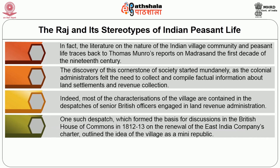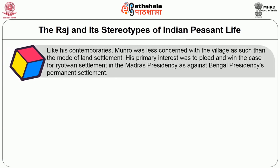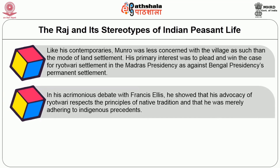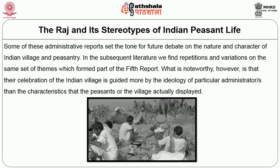One such dispatch, which formed the basis for discussion in the British House of Commons in 1812–13 on the renewal of the East India Company's charter, outlined the idea of the village as a mini-republic. More particularly, it is Thomas Munro's report on the Ceded District of Madras (1806) where one comes across the initial stereotype of the village as a 'little republic.' Like his contemporaries, Munro was less concerned with the village as such and more with the mode of land settlement. His primary interest was to plead and win the case for Ryotwari settlement in the Madras Presidency as against the Bengal Presidency's permanent settlement. In his debate with Francis Ellis, he showed that his advocacy of Ryotwari respects the principles of native tradition. Once Munro became governor in 1820 and established Ryotwari as a definite legal basis for land settlements in Madras Presidency, his formulations became part of official wisdom.